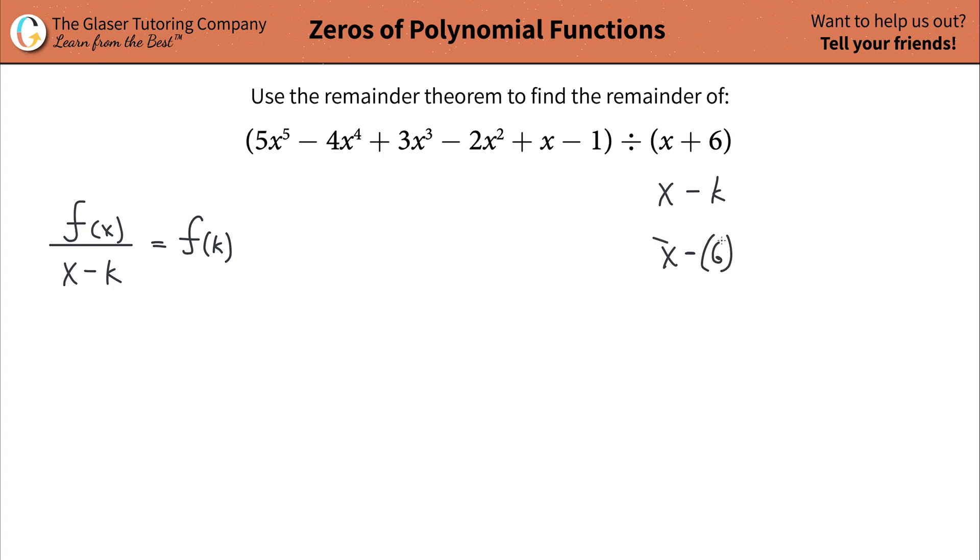Now if you notice, this is x minus k. This is your k. And if you were to simplify this, or distribute the negative, it would be x plus 6, which is identical to what was given. So basically your k value here using this method is going to be negative 6.